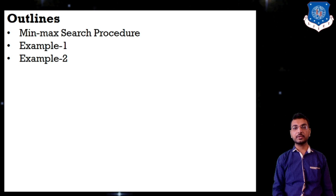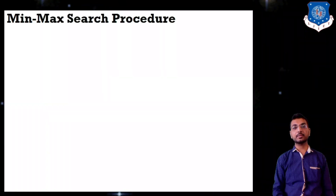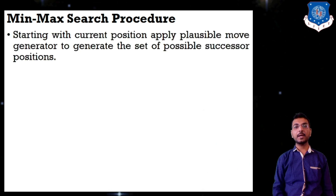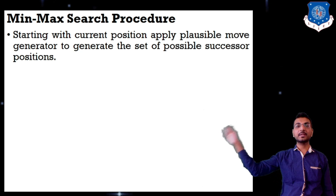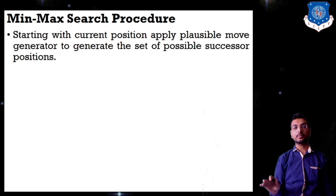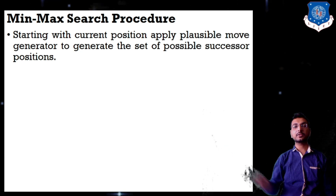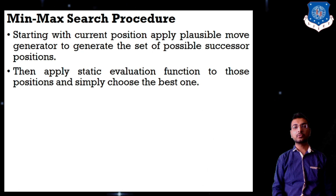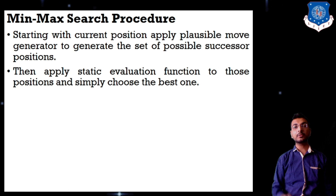Let us start with the Minimax Search Procedure. Starting with the current position, apply a plausible move generator to generate the set of possible successor positions. This procedure will be simulated like a tree. Then apply the static evaluation function to those positions and simply choose the best one.